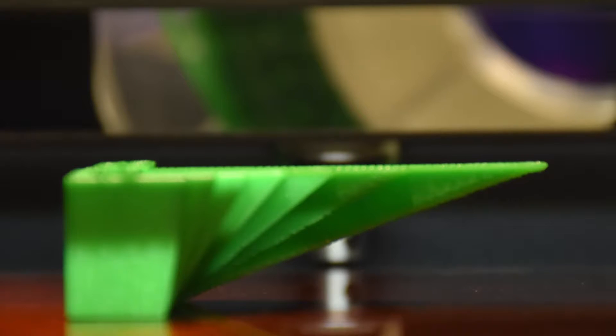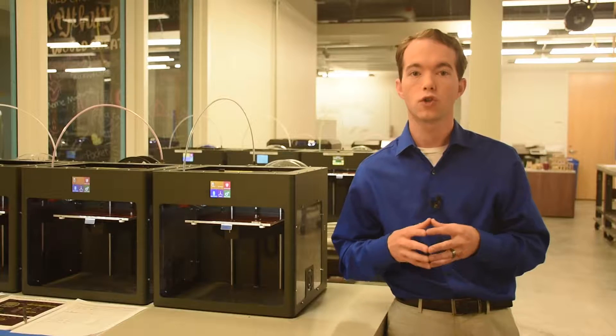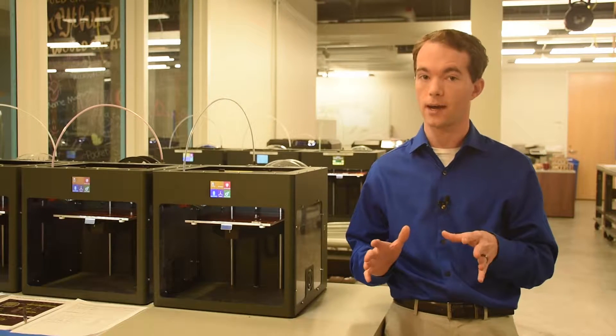You can see on this check block I made that no support was required all the way to 70 degrees from vertical. However, the surface of the slope isn't very pretty past about 50 degrees. So try to limit your angles to 45 degrees most of the time.